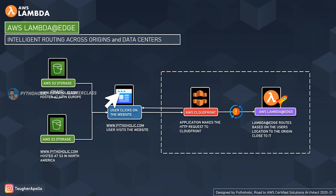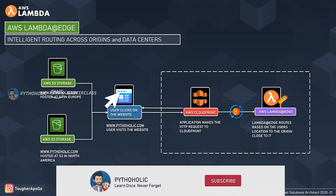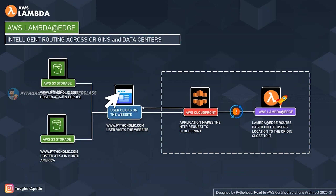The second use case is intelligent routing across origins and data centers. Even though S3 is a global service, when you create an S3 bucket you must assign it to a specific region — the data must reside within that region. So in this design we have two S3 buckets of static code: one hosted in Europe and one in North America. When the user accesses the website, Lambda at Edge is used to compute the route to the closest local origin.